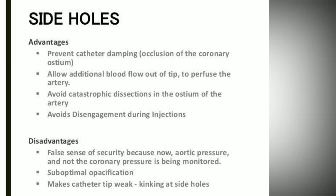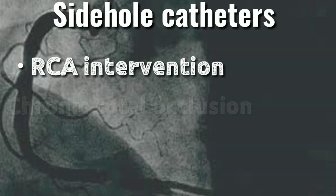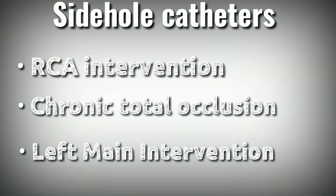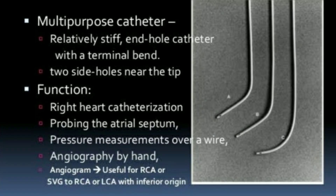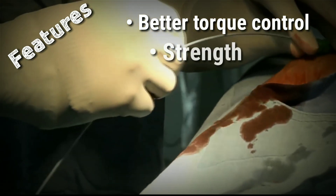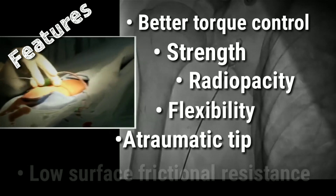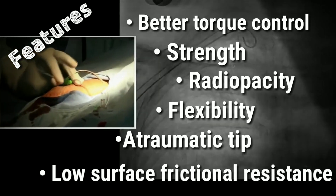Side hole catheters are used when pressure gets frequently damped, as in an RCA intervention, CTO intervention, or a left main intervention. A multipurpose guide wire is useful and ideal for RCA bypass graft or a high left main takeoff; it is straight with a single minor bend at the tip. A catheter includes a hub, body, and a tip, and ideal characteristics include better torque control, strength, radiopacity, flexibility, atraumatic tip, and low surface frictional resistance for good trackability of the guide wires.